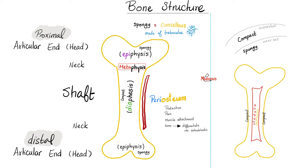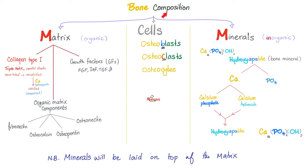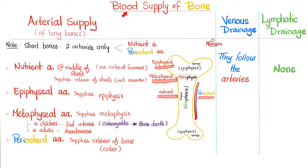Some cells of the periosteum are ready to differentiate into osteoblasts so that your bone can heal after fractures. Periosteum has healing powers. Bones are made of matrix, minerals, and cells — we've talked about all of this before. As for the arterial supply of your bones, you have the nutrient artery, which is very important.